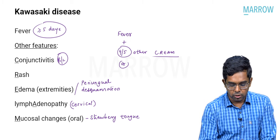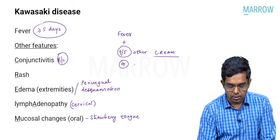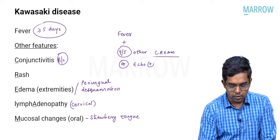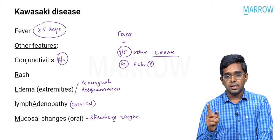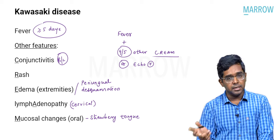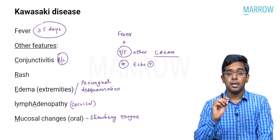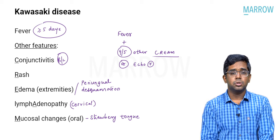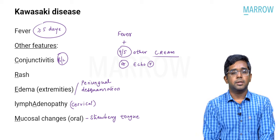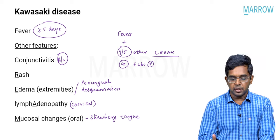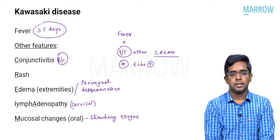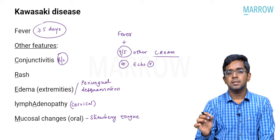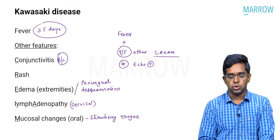To diagnose Kawasaki disease, fever should be present along with 4 out of 5 CREAM criteria, or you should have a suggestive echocardiography finding. In this question, fever was given, other findings were given, and echo showed coronary aneurysm — so definitely it is Kawasaki disease, and the treatment is IVIG.